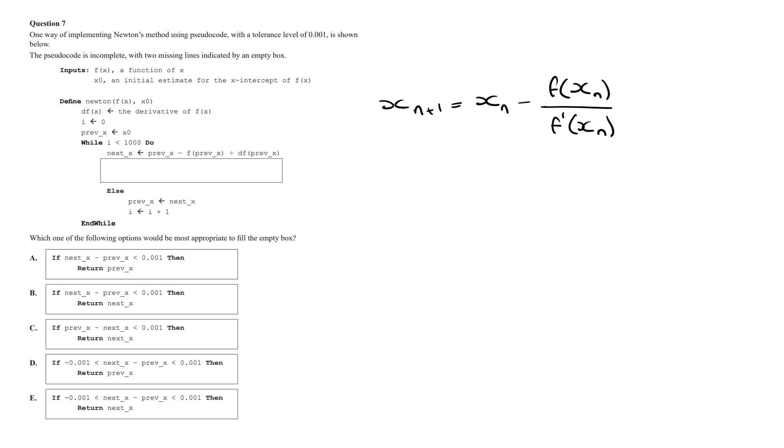To have a tolerance level of 0.001 means that we want this algorithm to stop when the difference in distance between the next estimate and the previous estimate is less than 0.001. In other words, x_n+1, which is the next value, minus the previous value x_n has to be less than 0.001.